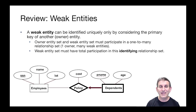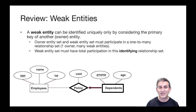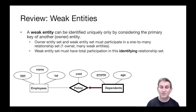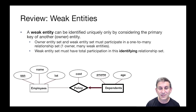Let's review our weak entities. A weak entity can be defined uniquely only by considering the primary key of another owner entity. The owner entity set and the weak entity set must participate in a one-to-many relationship set. There's a key constraint on dependence to policies, and the weak entity set must have total participation — so it's a bold edge. That's an arrow in that identifying relationship set.